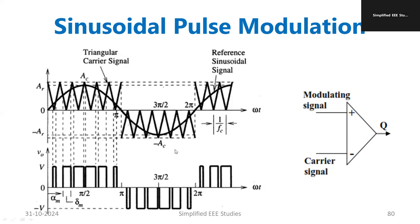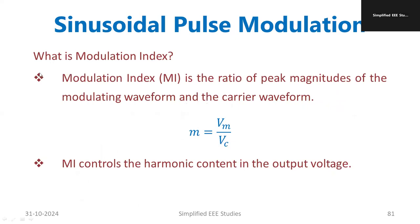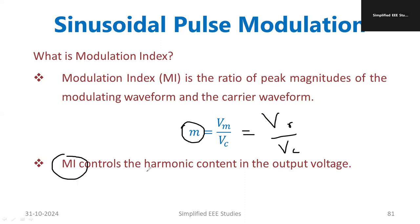The reference sine wave is compared with the carrier triangular wave to generate the pulses. The modulation index is the ratio of the reference signal voltage Vr to the carrier signal voltage Vc. Using the modulation index you can control the output voltage. Modulation index is directly proportional to the output voltage — that is another key point to observe.